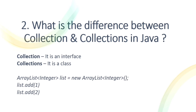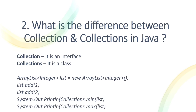Collections is a utility class in Java that has static methods, called using the class name. It has methods like min() and max(). For example, Collections.min(list) finds the minimum and Collections.max(list) finds the maximum of a list. That's the difference between the Collection interface and the Collections utility class.